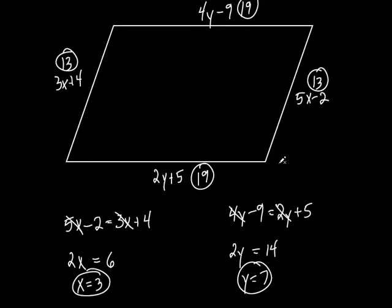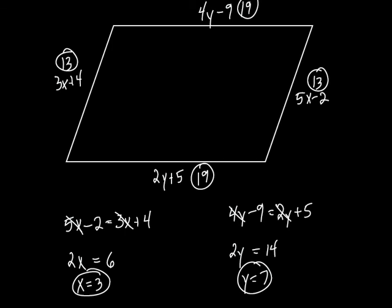Parallelograms are pretty easy so far. Just know a few things: the opposite sides are parallel, opposite sides are equal, opposite angles are equal, and diagonals bisect each other. The next couple of days we're going to be talking about rectangles, squares, and trapezoids. We probably won't have a quiz tomorrow, but there'll likely be one early next week — probably on sections 6.1 and 6.2. I'm going to give you a worksheet to finish for tomorrow.